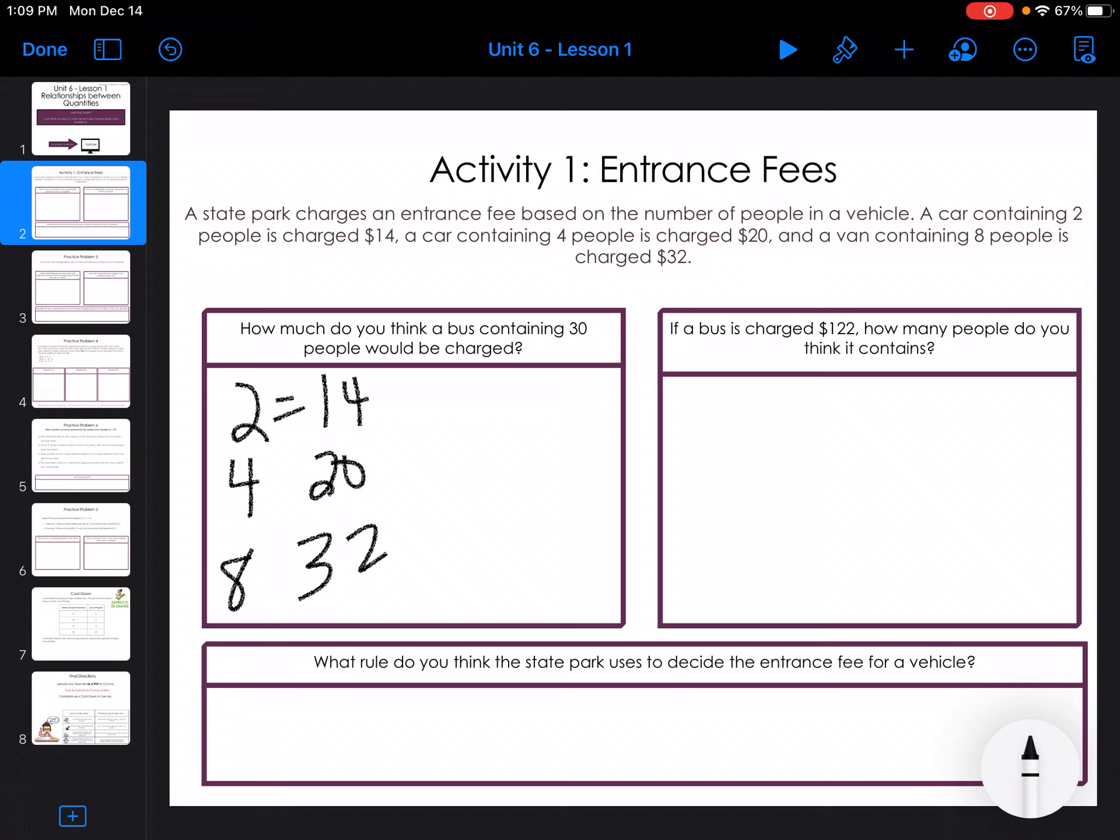Okay, so I need to think about what's happening here. To get two more people in, the increase is $6. So I'm thinking it's $3 per person.